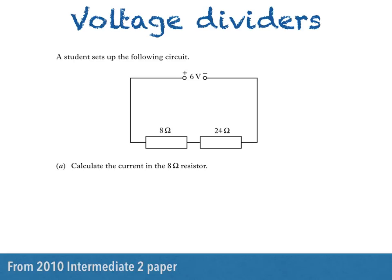Part A then asks us to calculate the current in the 8 ohm resistor. Now, the important thing here is that it's a series circuit which means that the current is the same at all points. So whether we're being asked for the current in the 8 ohm resistor or the current in the 24 ohm resistor or the total current in the circuit, we get the same answer.